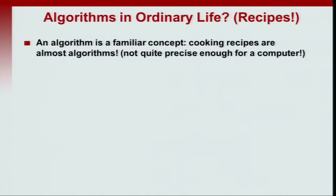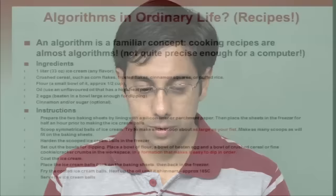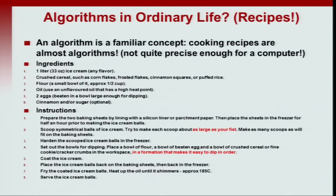An algorithm is a very familiar concept. The most important example that you can think of are cooking recipes. Cooking recipes are written in a way that they are almost algorithms. They are not quite precise enough for a computer, but they come quite close. For example, let us take an unnamed dish, a dessert, and let us look at how things are specified in a recipe. We will see that this analogy is quite deep. There is a very strong similarity in the way that a recipe is written and a program is written.